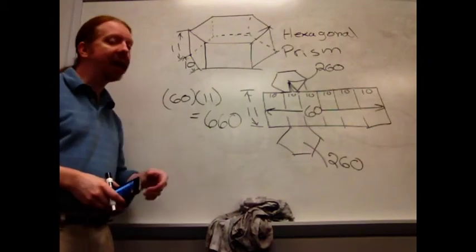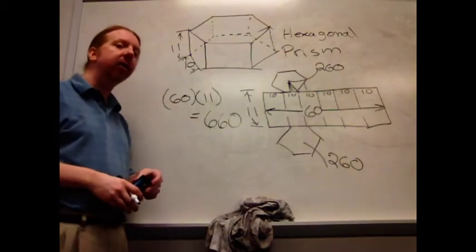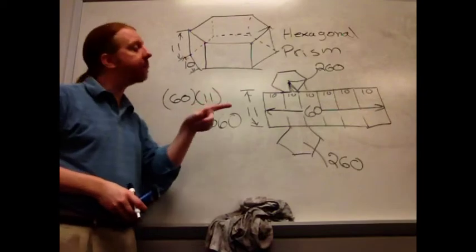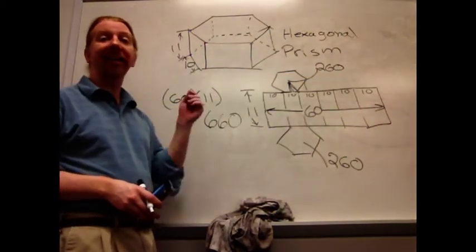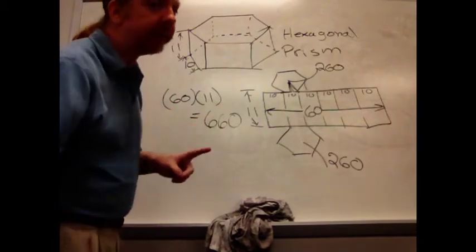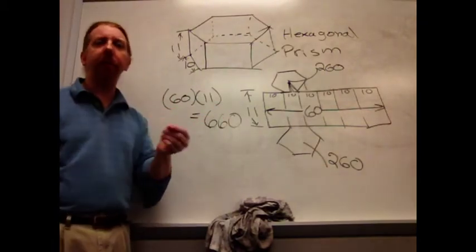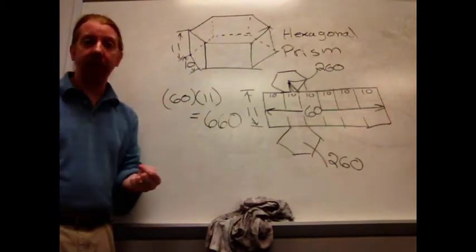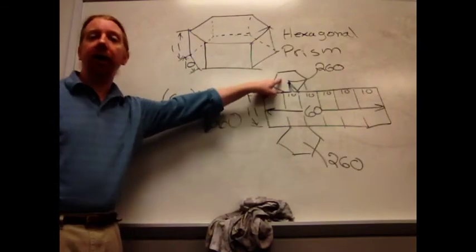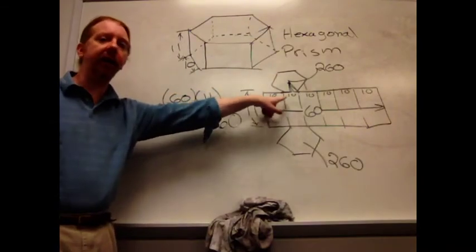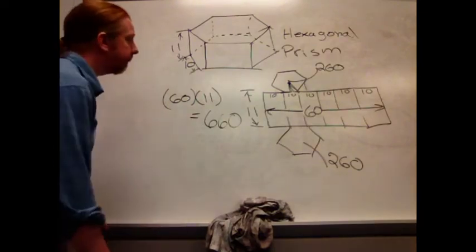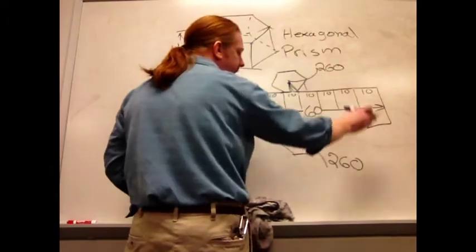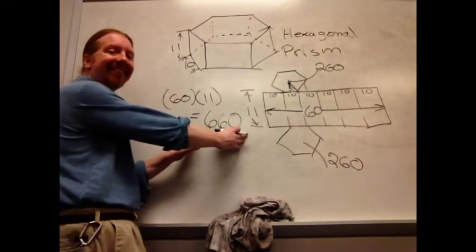So once I have those, I can go ahead and add all of the areas together, and that'll give me the total surface area. You want to review the area of a regular polygon. It's not going away. But for this example, we're not going to spend the time on that. I recommend you go look back at the Chapter 9 material for refreshers on how to take a hexagon with a side length of 10 and come up with the area. Remember, you're going to use tangent in your work. So now I've got my 260 here, my 260 here, my 660 here.